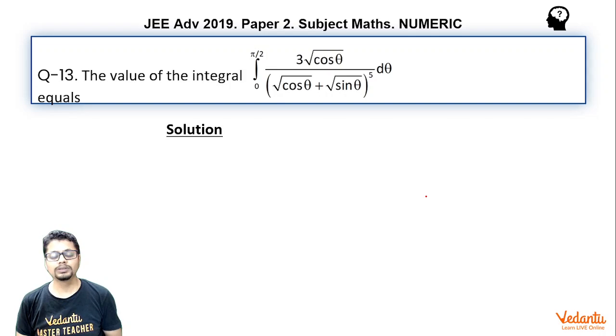But as you do this, it will become integral 0 to pi by 4. If you think and try to visualize, integral 0 to pi by 4, 3 by under root cos theta plus under root sin theta whole to the power 5 will become common in the two terms f of x and f of 2a minus x. And the numerator essentially would become under root cos theta plus under root sin theta, which will cancel out.